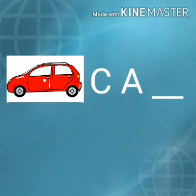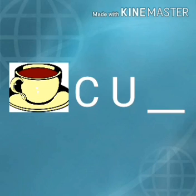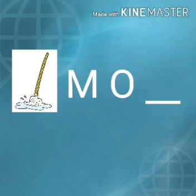Which is this picture? Yes, it's a car. It's given C, A, and a blank. What is the spelling of car? It's C, A, R — car. R is the consonant in this word. Which is the next picture? Yes, it's a cup. What is the spelling of cup? It is C, U, P — cup. And P is the consonant in this word. Now, which is this picture? Yes, it's a mop. What is the spelling of mop? It's M, O, P — mop. And in this word, P is the consonant.